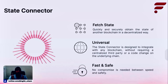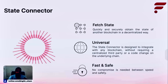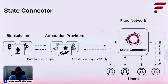Developers will be able to access the value, liquidity, and the information of multiple ecosystems through a single deployment on Flare. It has been designed to be able to integrate with any blockchain without requiring a centralized third party or a core change on the underlying chain. This approach to cross-chain connectivity means there is no compromise needed between speed and safety. The State Connector system uses a set of independent attestation providers to acquire specific information and deliver it to the Flare network.